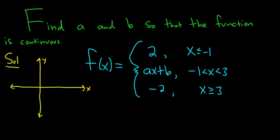And it looks like the first piece is 2 when x is less than or equal to negative 1. So if this is negative 1, we're up here at 2. And so we have a horizontal line. It looks like this.